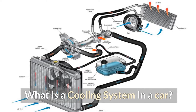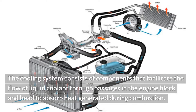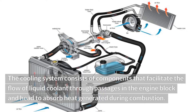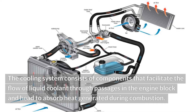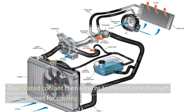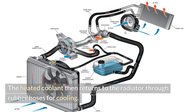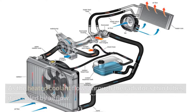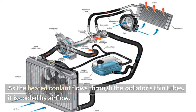What is a cooling system in a car? The cooling system consists of components that facilitate the flow of liquid coolant through passages in the engine block and head to absorb heat generated during combustion. The heated coolant then returns to the radiator through rubber hoses for cooling, where it flows through the radiator's thin tubes and is cooled by airflow.